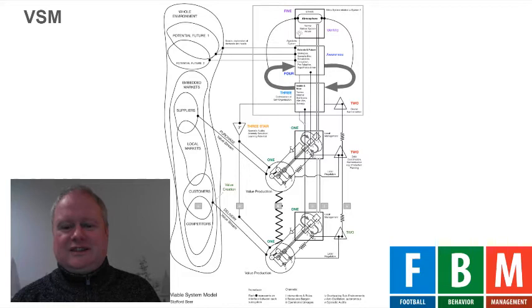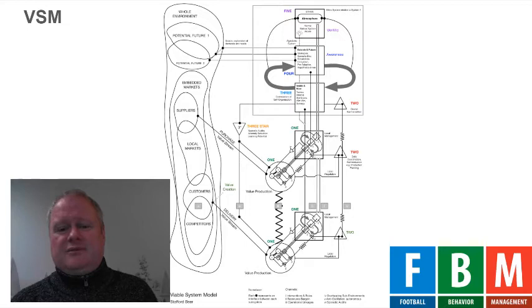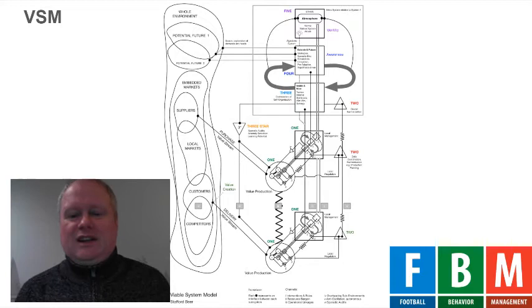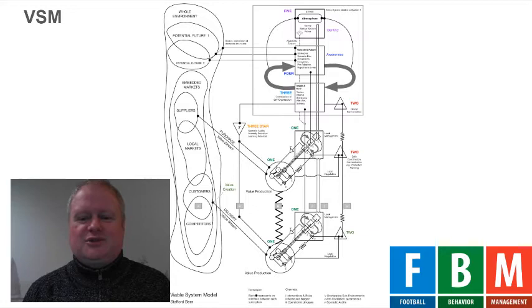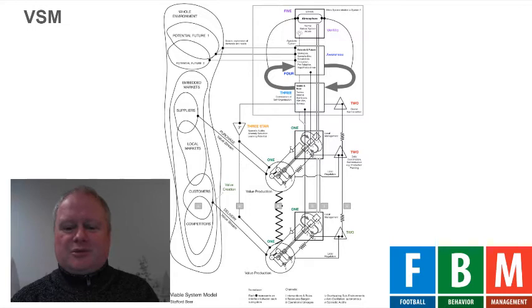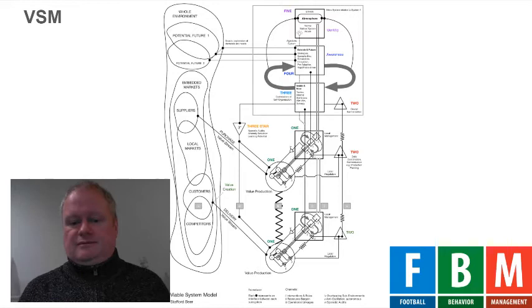Finally, we have System Five, which is basically the final decision maker — if there's a board of non-executive directors, then it's the board; if there's an owner, then it's the owner. Their main job is basically to sleep, and they only have to wake up if System Four and System Three can't come to an agreement. So if the daily operations say they have enough players, but the technical director and scouts say they need new players, and they can't reach an agreement, then the owner or the board has to step in.